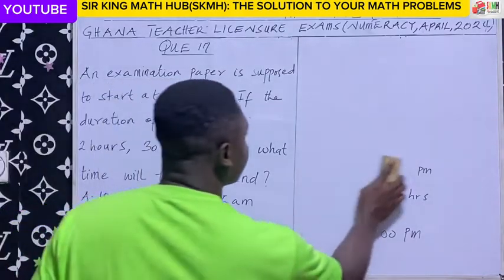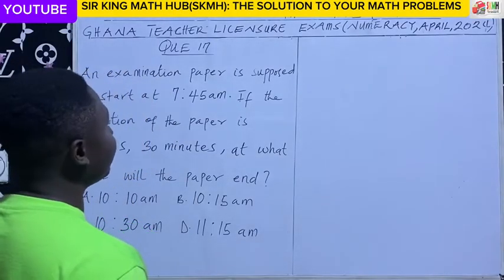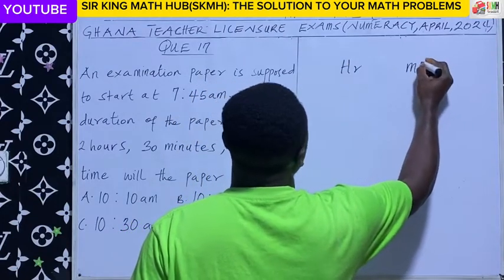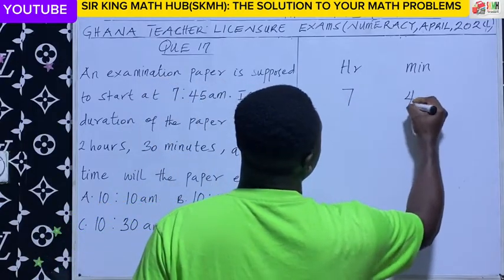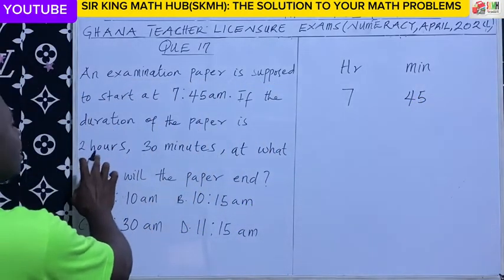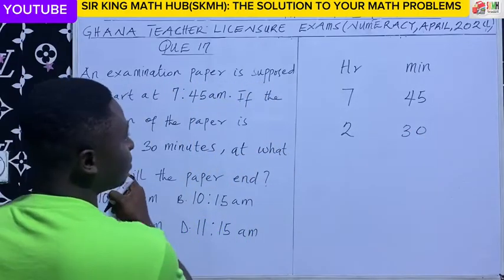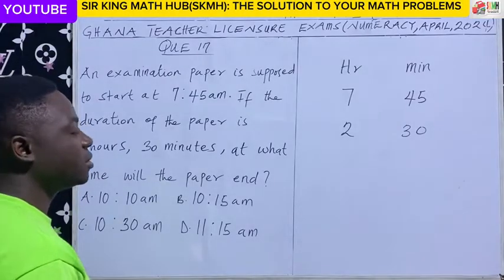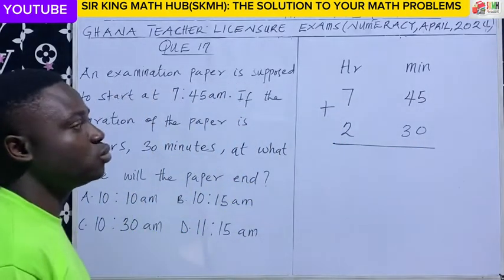Let's apply the same concept. We know that the exam is supposed to start at exactly 7:45am. So we have the hours and the minutes — 7 will be placed at the hours column and 45 will be placed at the minutes column. We are told that the duration of this paper is 2 hours 30 minutes. To calculate the end time, we need to add the start time to the duration.